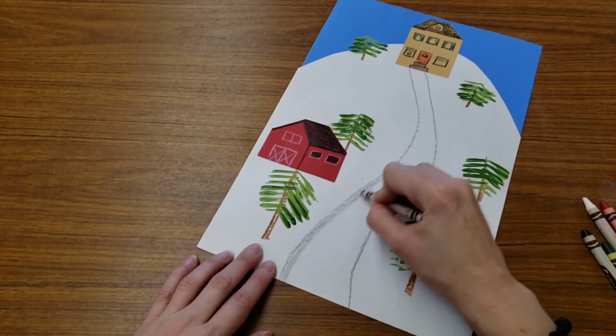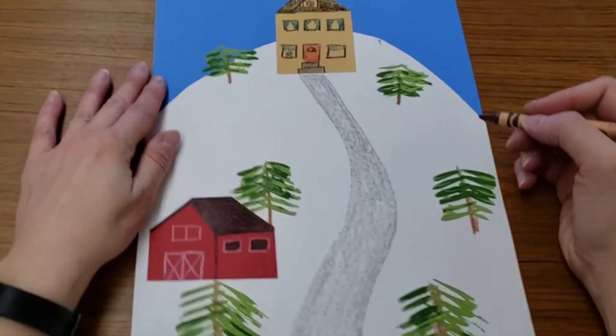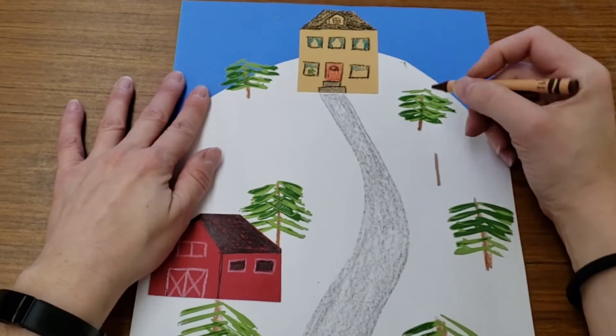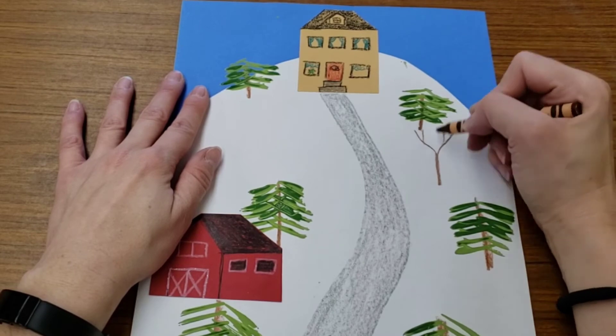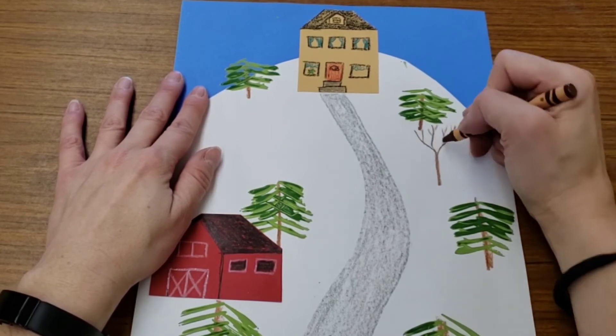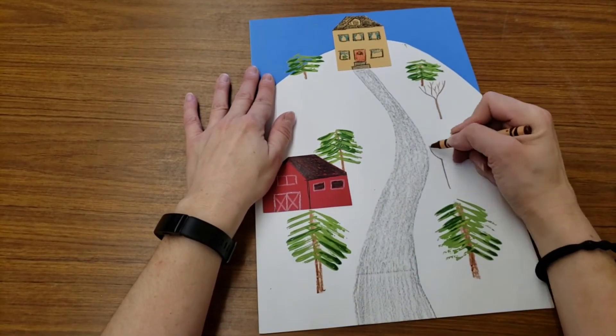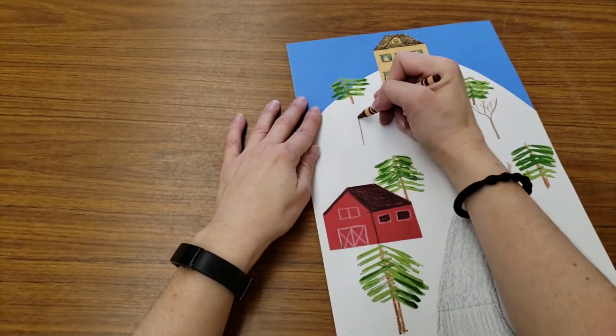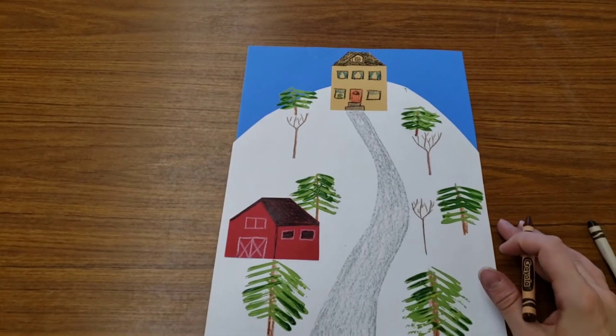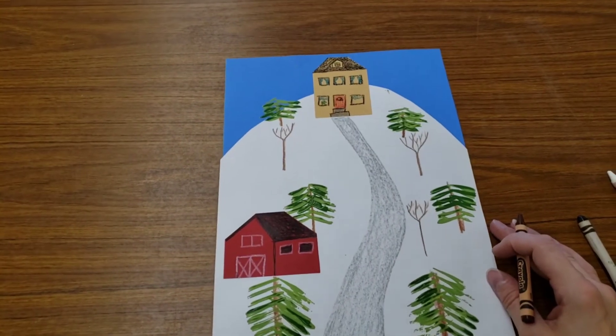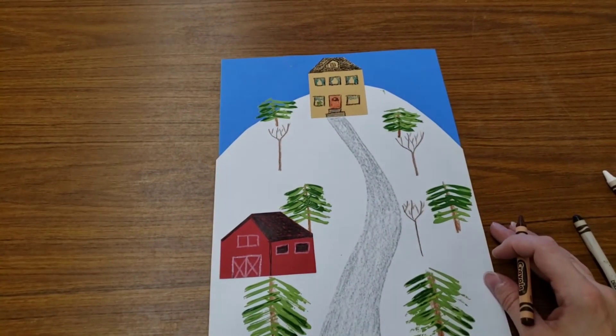So I'm going to start with a long driveway that curves down, and then as it comes closer to us it will get wider, and then we will color that in. I can add other types of trees, so you start with a Y shape and start giving the Y more branches.